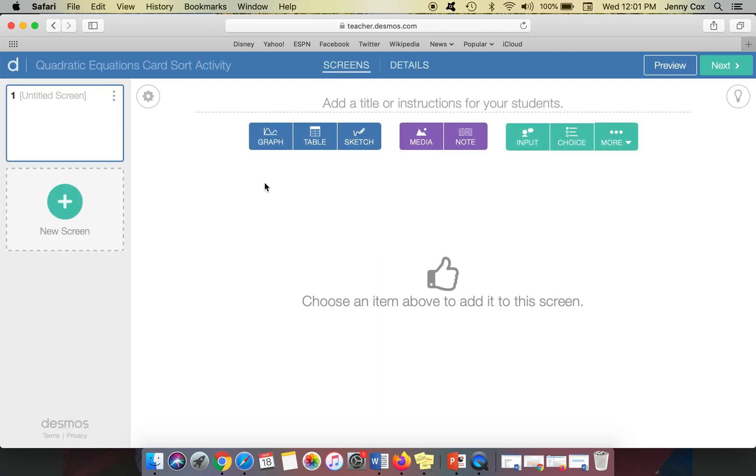So if I want to create a card sort, I have all of these options here. I have graph, table, sketch, media, note, and so on. And I would go to more and I would hit card sort.